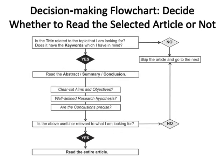Decision-making flowchart — decide whether to read the selected article or not. Step one: Is the title related to the topic I am looking for? Does it have the keywords I have in mind? If yes, proceed to read the abstract, summary, or conclusion. Never start reading an article from beginning to end. It is better to begin by identifying the conclusions of the study by reading the title and abstract.